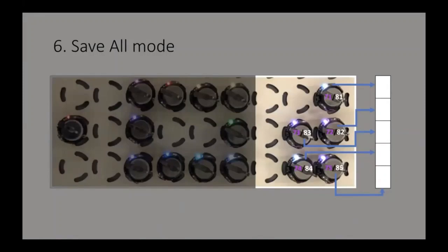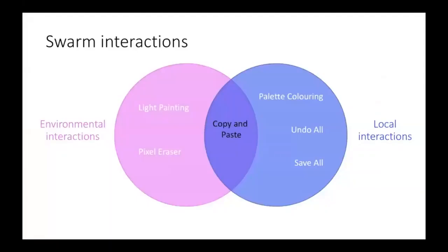In swarm systems in general, and in our system in particular, there are two types of interactions: environmental and local. Environmental interactions occur when robots respond to their environment, and the human can manipulate the environment around the robots to communicate with them. Local interactions occur when robots locally communicate with one another to understand the state of the swarm and make decisions.